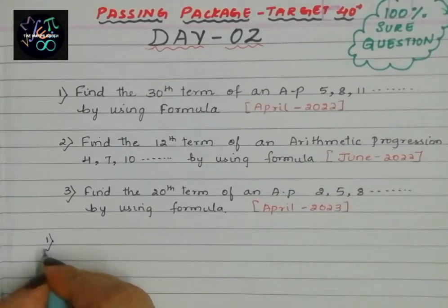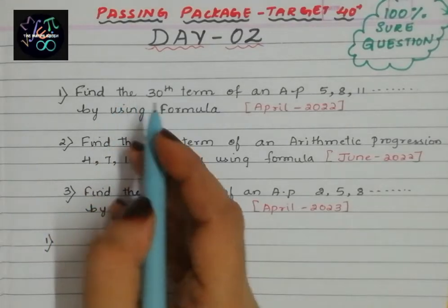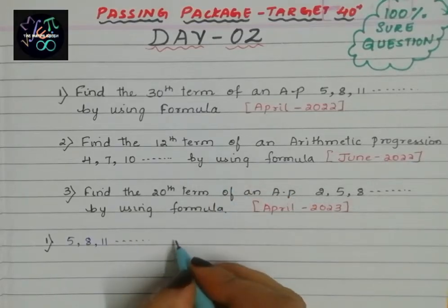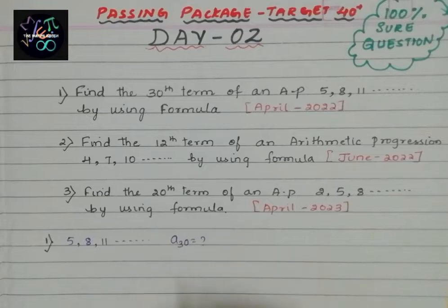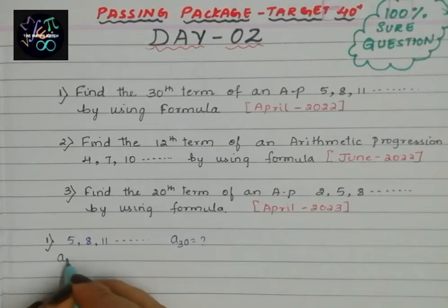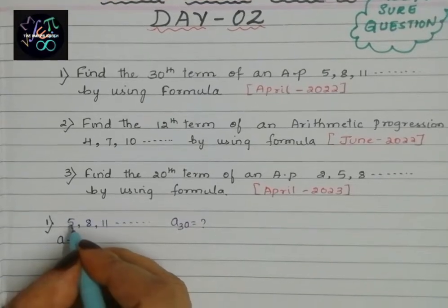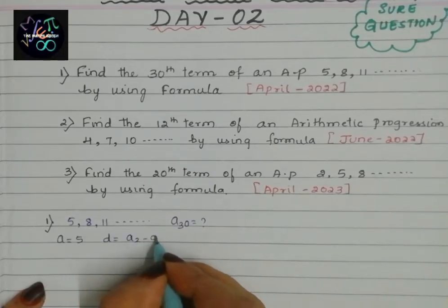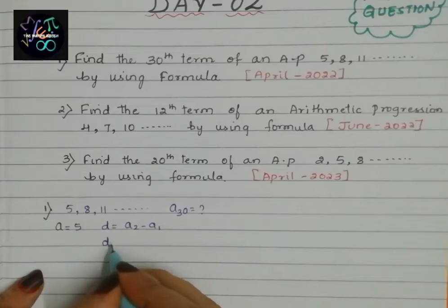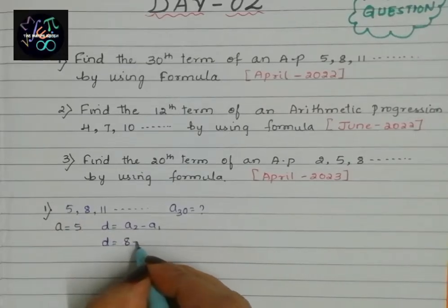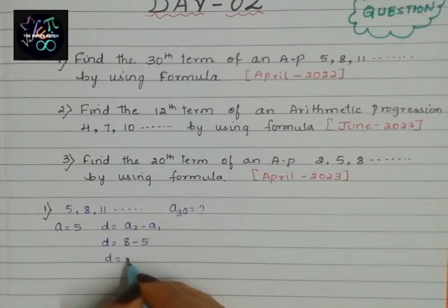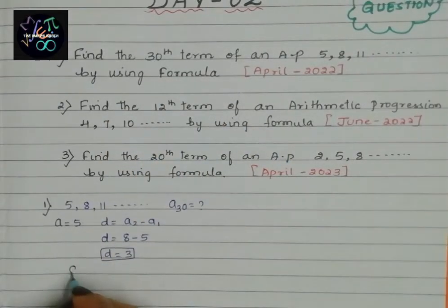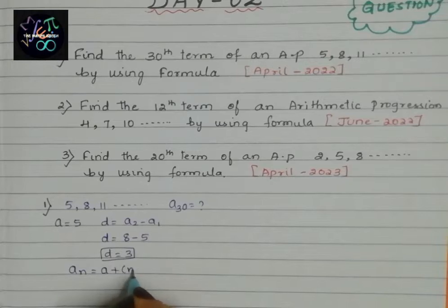Solution for the first question: the AP given is 5, 8, 11. We have to find the 30th term, A30. The first term A is always the first number, so A equals 5. D equals second term minus first term, so D equals 8 minus 5, which is 3. Using the formula, A_N equals A plus (N minus 1) times D.